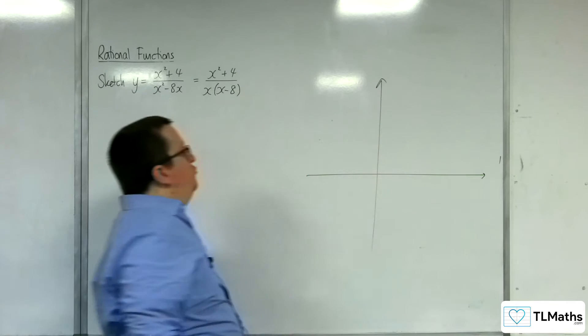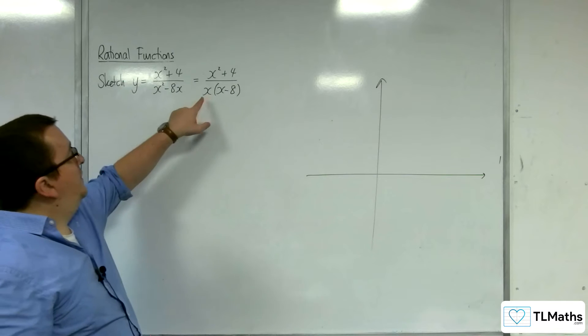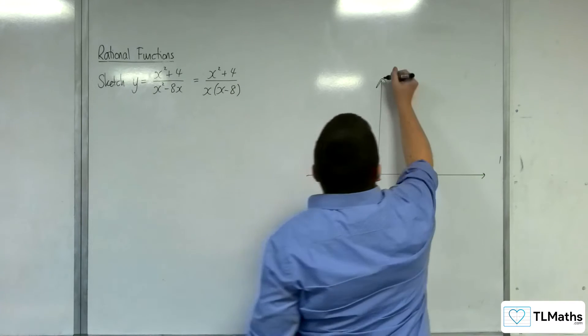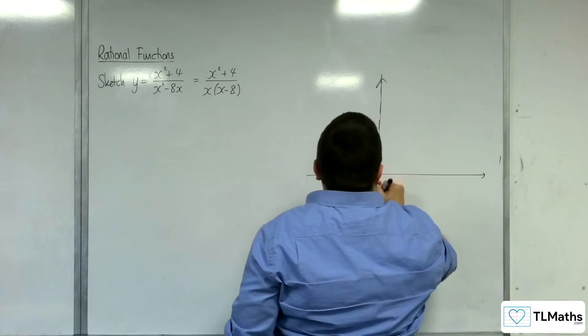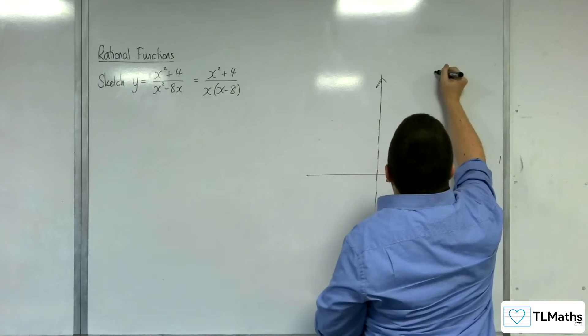First thing to draw on our sketch are any vertical asymptotes, which occur when the denominator is 0, so that's at 0 and 8. So x = 0 and x = 8.